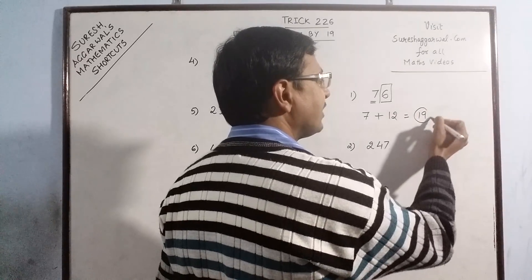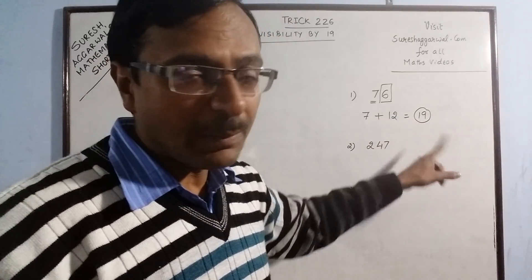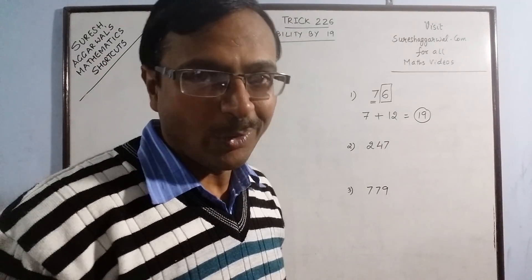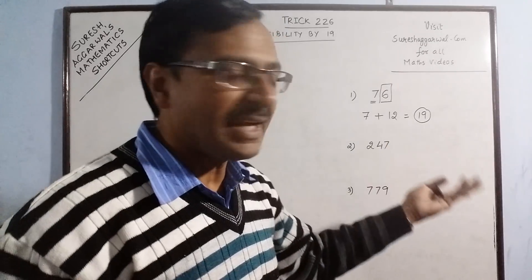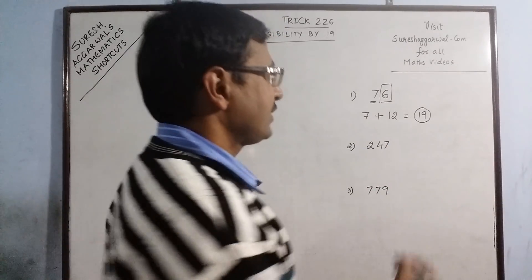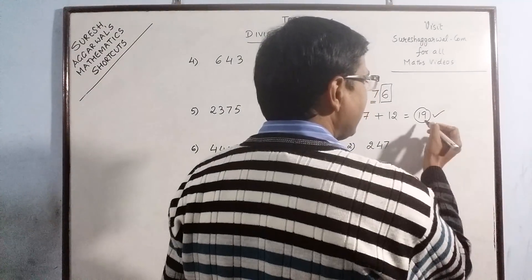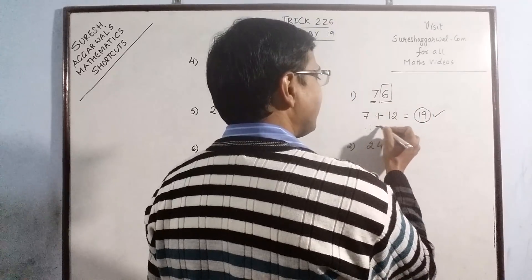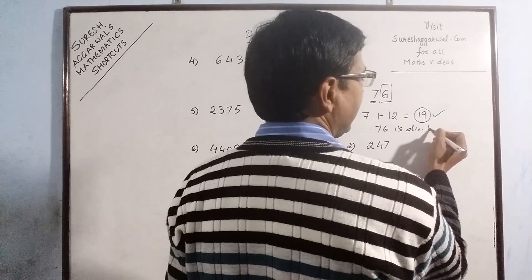Now check whether this number is divisible by 19 or not. Obviously, 19 was the 19. So since 19 is divisible by 19, therefore 76 is divisible by 19.